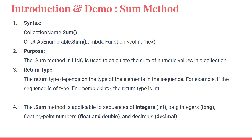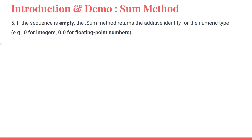The sum method is applicable to sequences of integers, long, floating point, double, and decimal types. Important point: if the sequence is empty, the sum method returns the additive identity for the numeric type. For example, if you created an empty integer list, the output would be zero; for a float, the output would be 0.0.